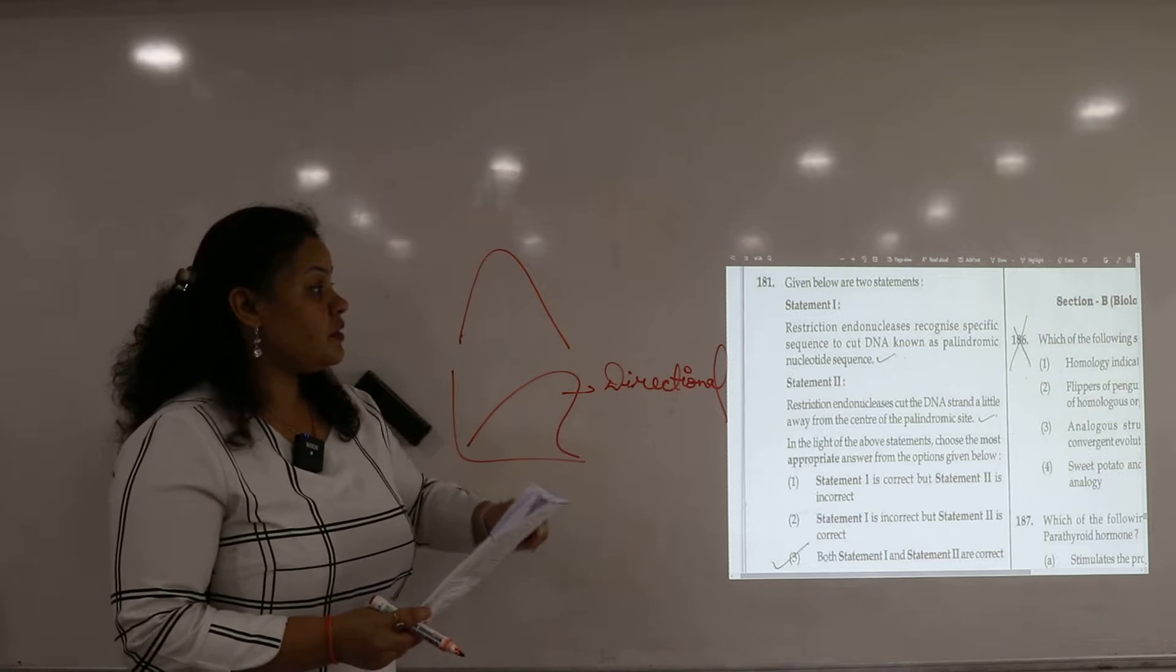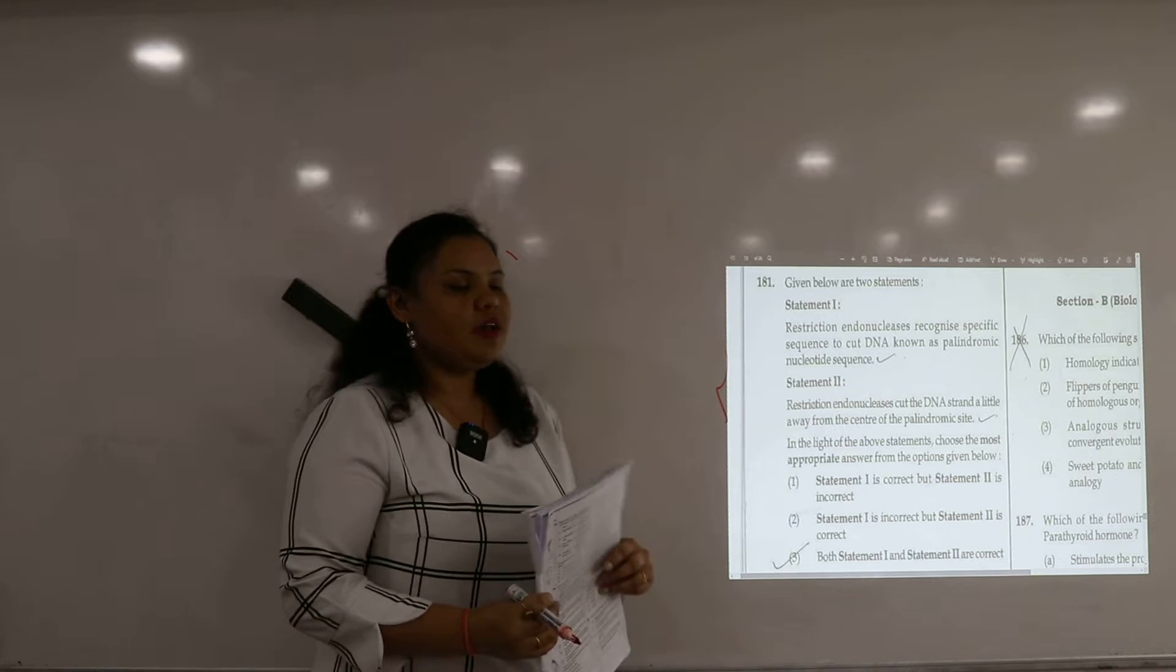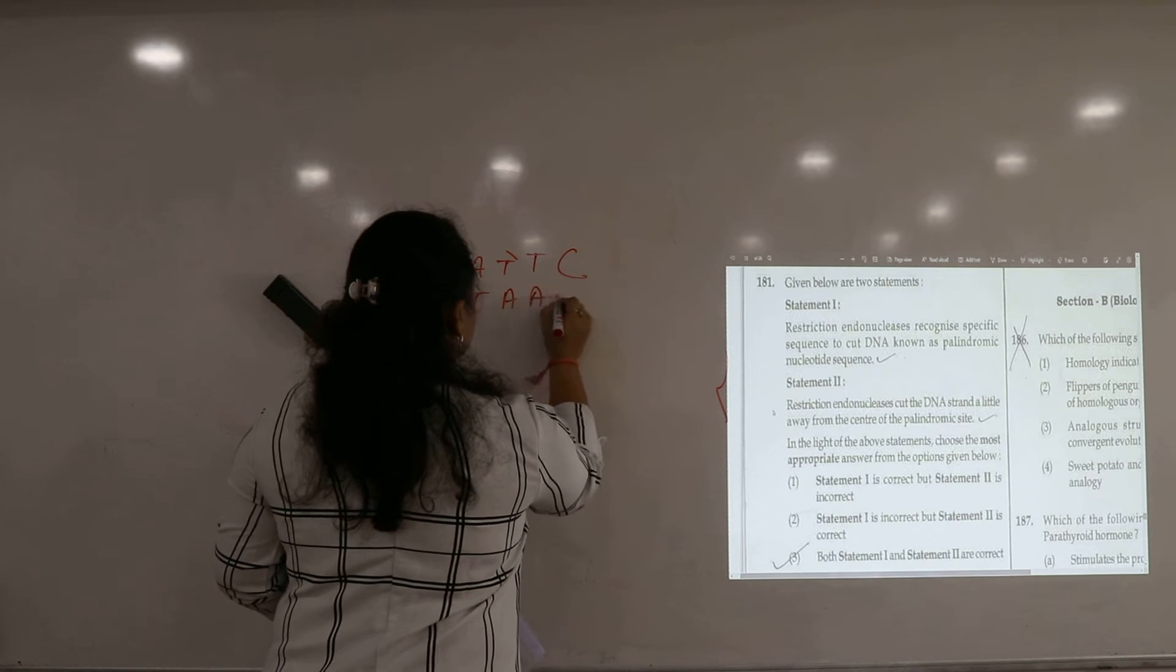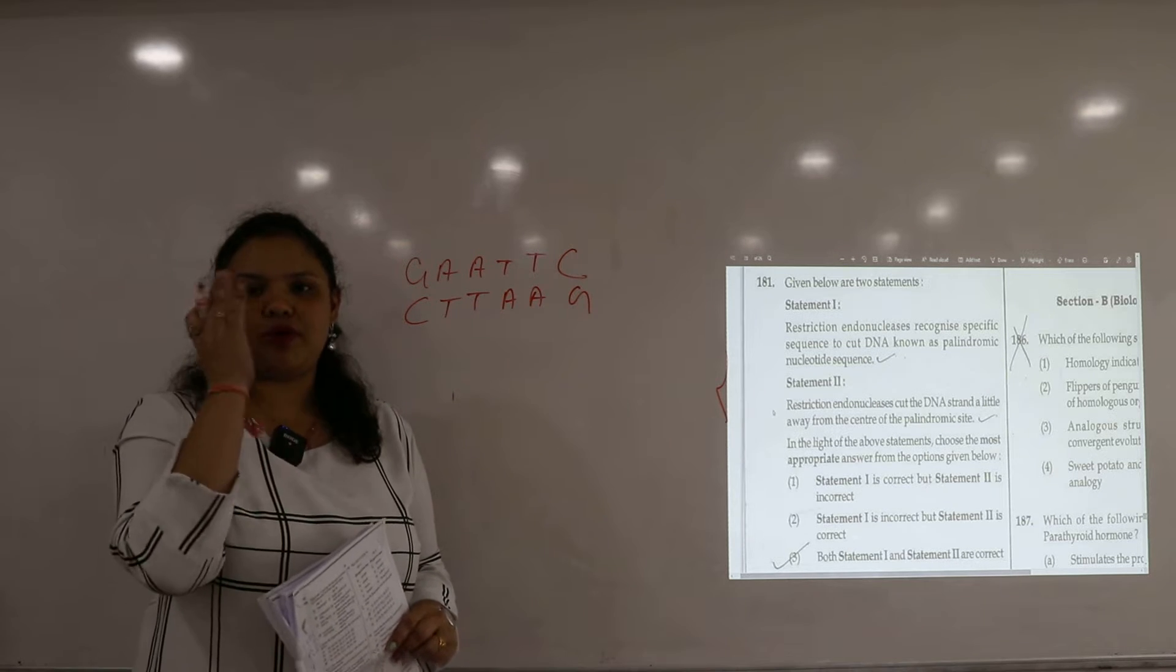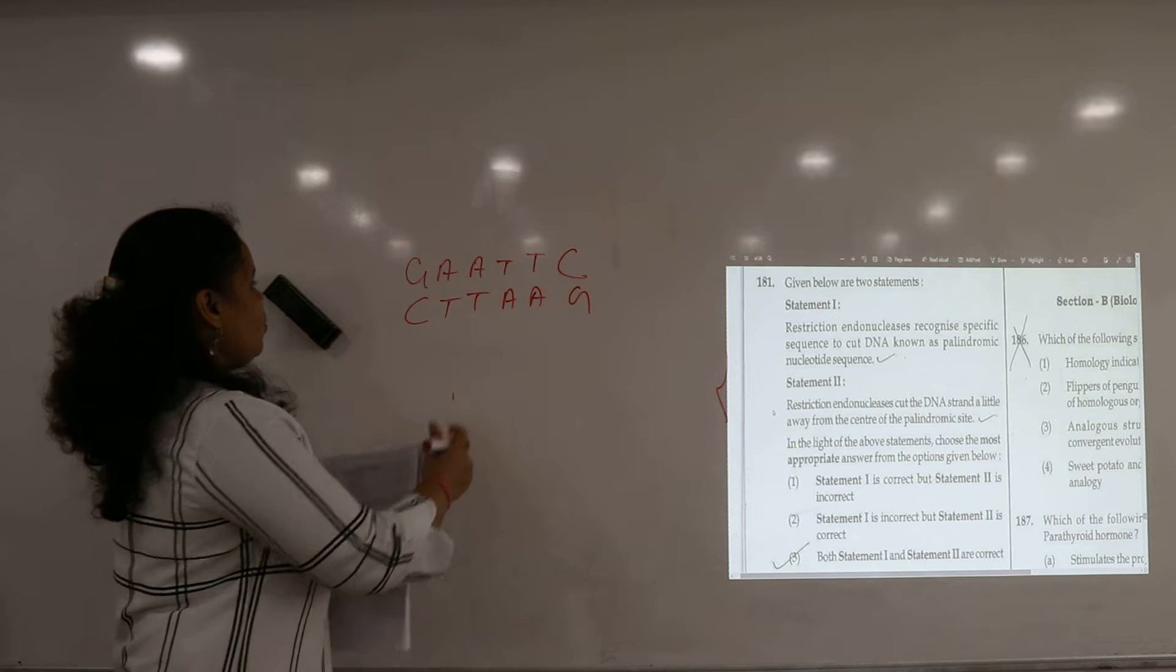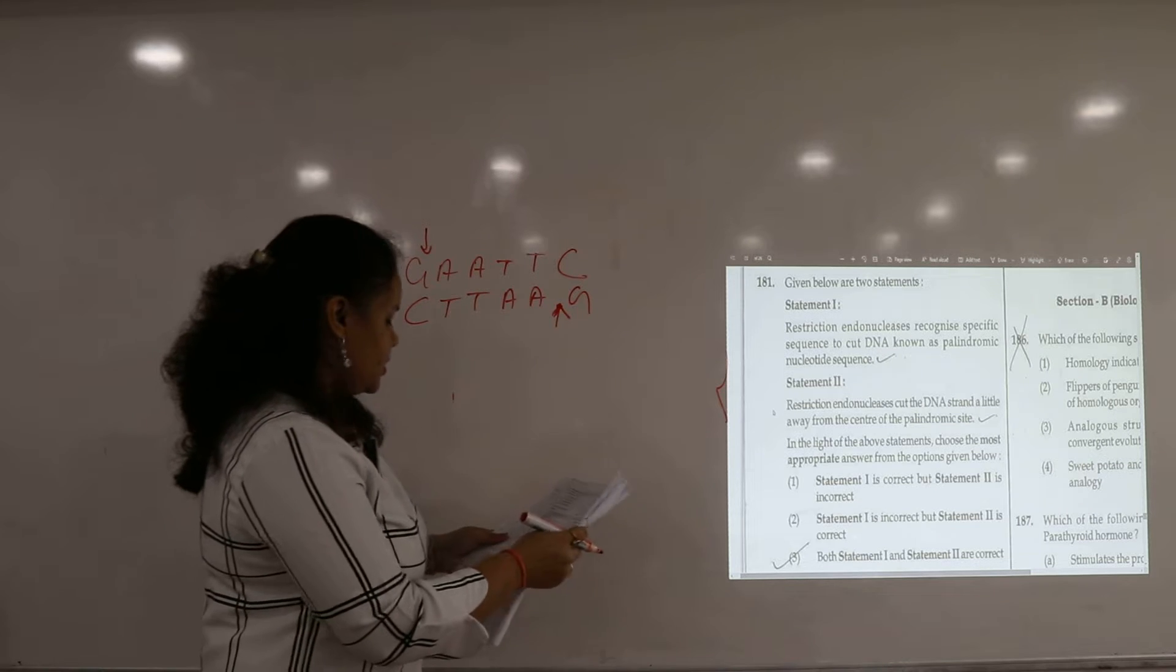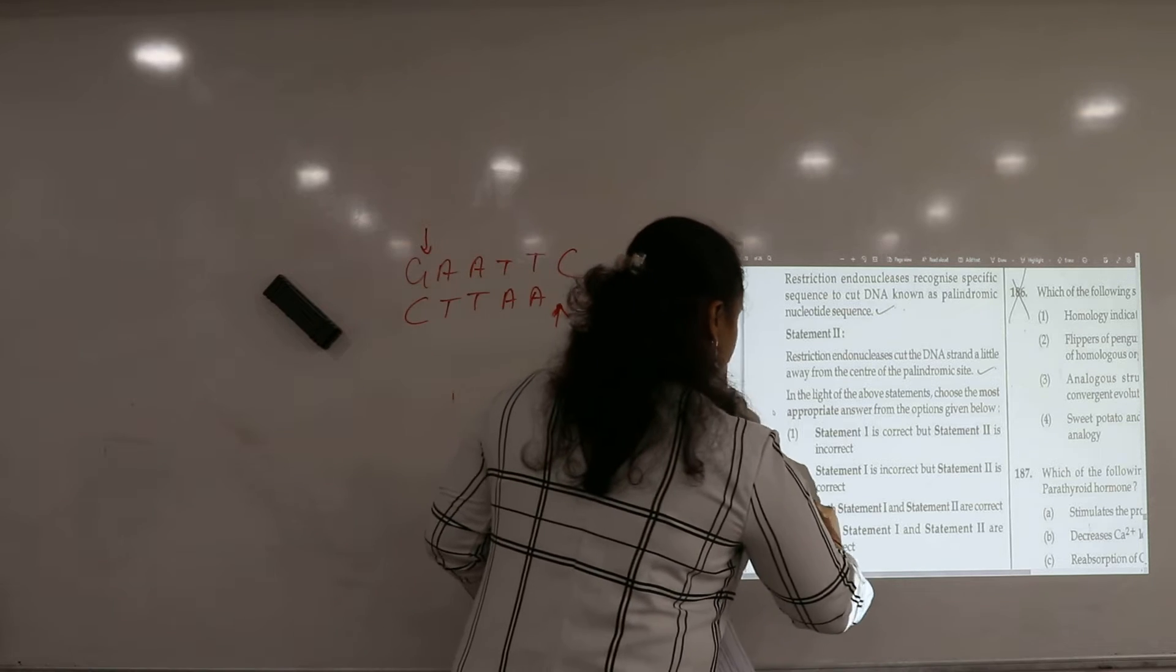Question 181. The first statement is restriction endonucleases recognize specific sequence. Palindromic sequence. Statement two: restriction endonucleases cut these strands a little away from the exact center, generally a little away from the exact palindromic site. So in this case your statement one and two both are correct. So our answer for this question will be three.